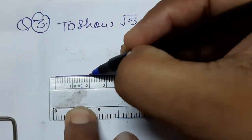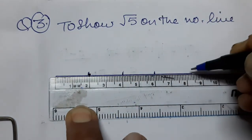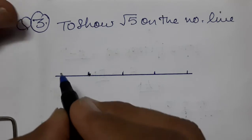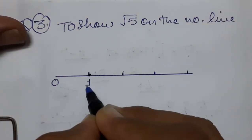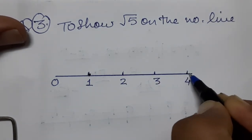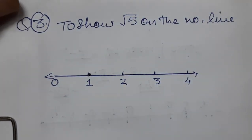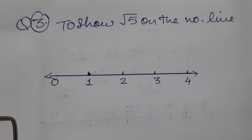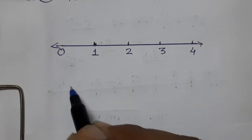We take 2 cm as 1 unit — marking 0, 1, 2, 3, 4 on the number line. Before drawing, we need to understand what √5 means. √5 = √(4+1) = √(2² + 1²). So we need a side of 2 units and a perpendicular of 1 unit.